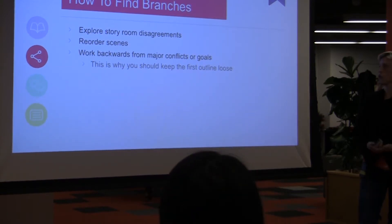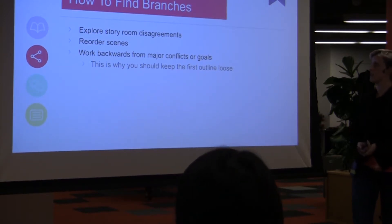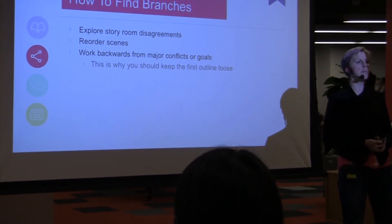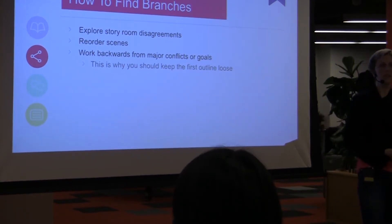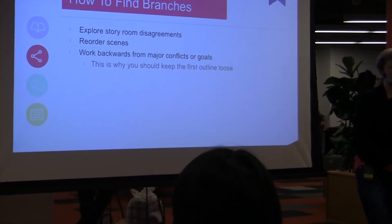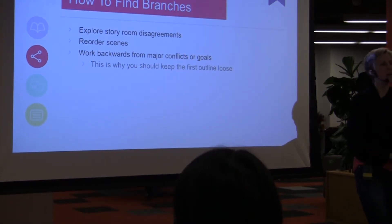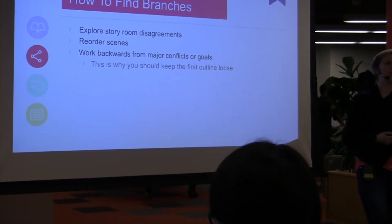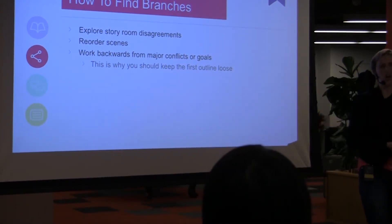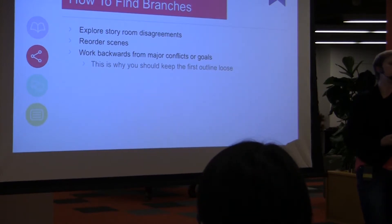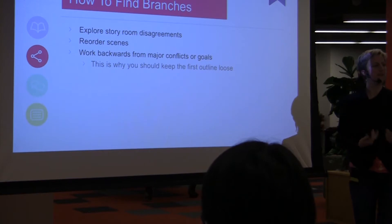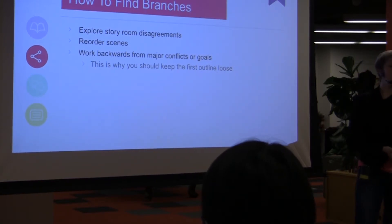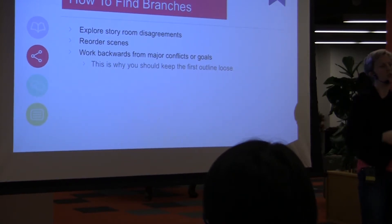Finally, one of my favorites: when you're looking at those beats from your outline, work backwards from any major conflict or goal. Think about a fixed point that you know has to happen — she has to find her sister's body, she has to get married to the guy — and change the smaller beats along the way, like how she got there, in between the two arcs. This is a pretty simple and quick way to make big, satisfying branches without blowing up your story too much, because you've made sure all the key beats around them stay the same.